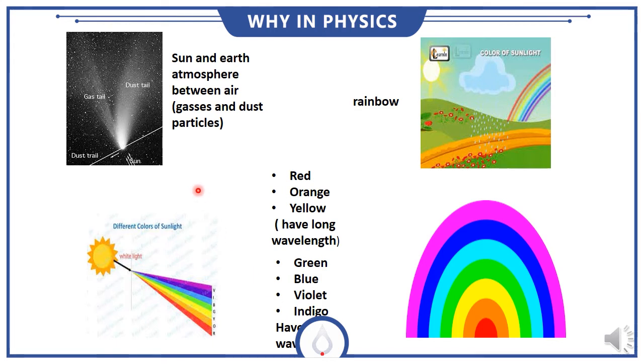When sunlight comes to Earth, it must pass through the atmosphere. The atmosphere contains air.